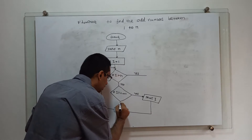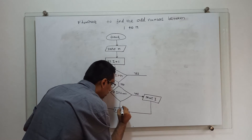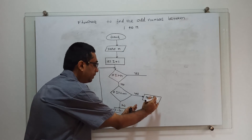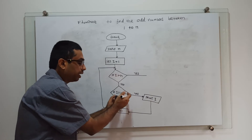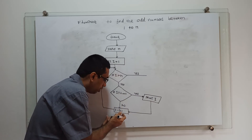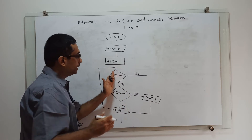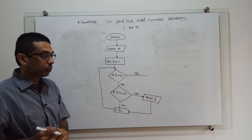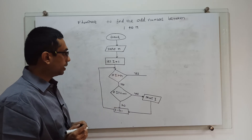If i modulo 2 is not equal to 1, I am simply not printing the value because it is an even number. I will just increment the value of i and connect it back to the loop.